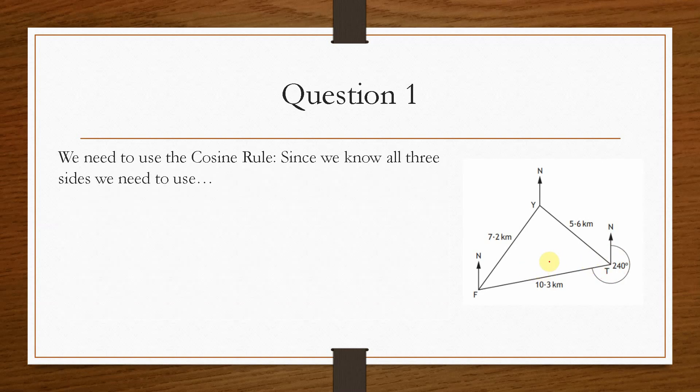Now if we set this up, we'll use the cosine rule because we know all three sides. So we can use this equation here. Now because we know all three sides, this equation is quite easy. Apart from we have to be careful which one we label A.